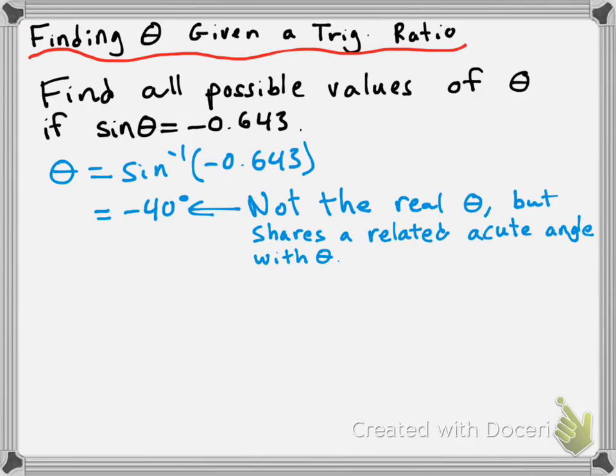So what this tells us is that we are looking for basically all possible angles on our Cartesian plane with related acute angles of 40 degrees where sine will be negative, because we do have a negative ratio for a sine here. So we want to consider which quadrants sine is negative, and we want to make sure that we have a 40-degree related acute angle in those quadrants.